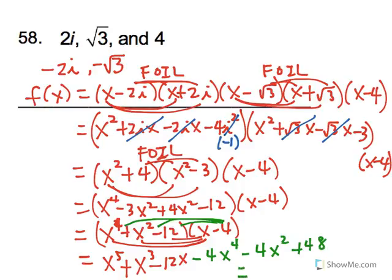It looks like every term is unique, but we can just rearrange everything into standard form, which is x to the 5th minus 4x to the 4th plus x to the 3rd minus 4x squared minus 12x plus 48. And that is the function that has all of those roots that are given from the problem.